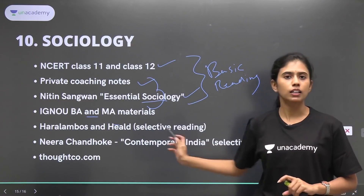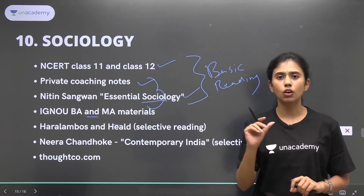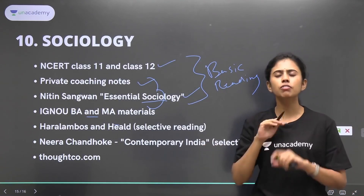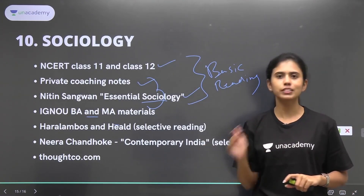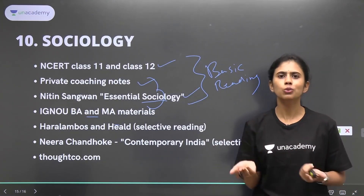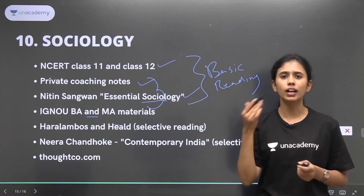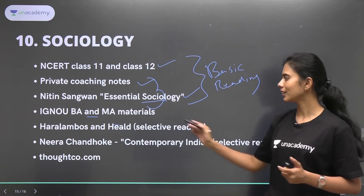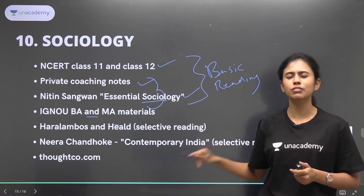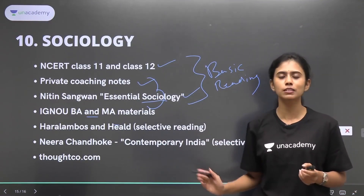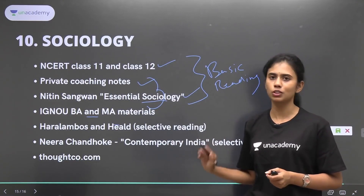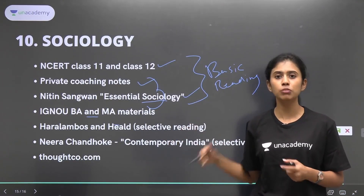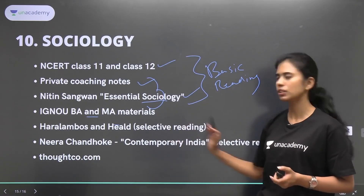Then there is a book called Haralambos and Heald, which is an orange-colored book — I did a selective reading of it. It is a wonderful book, not just from an exam perspective. To understand the discipline and to kind of like the discipline, you can start with Haralambos and Heald, which very beautifully explains various concepts of Sociology. So it is not just for the exam, but to get a grasp of what the subject is about, you can use Haralambos.